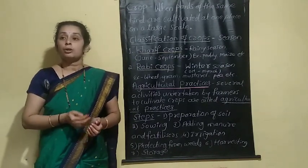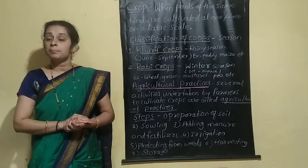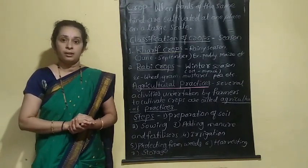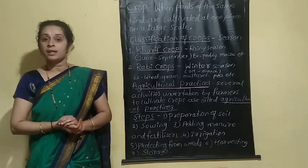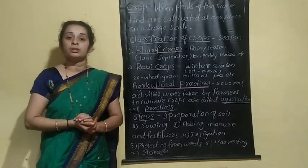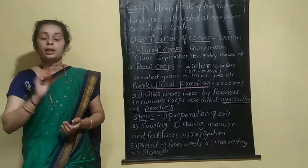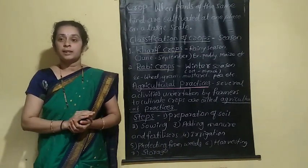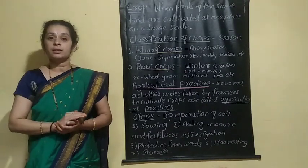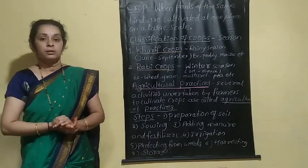In India, crops are classified into two types based on the season. The two types of crops are: first, kharif crops, and second, rabi crops.